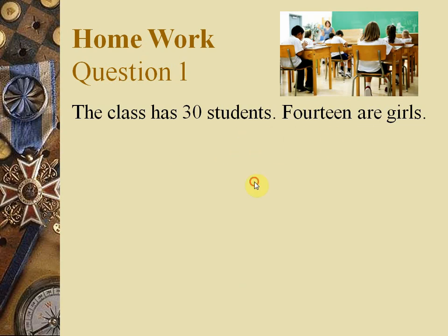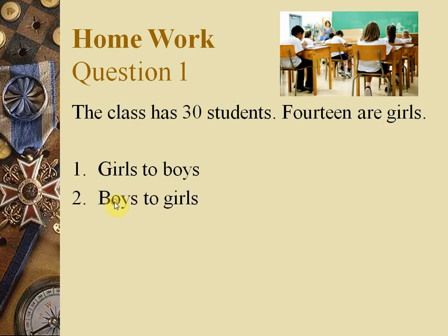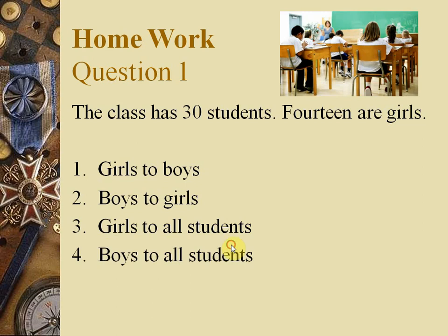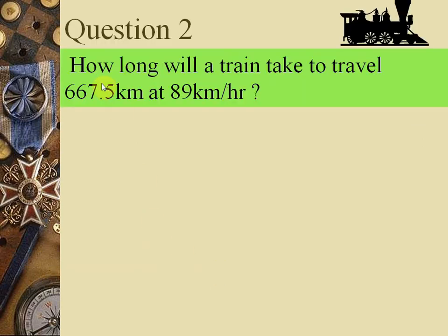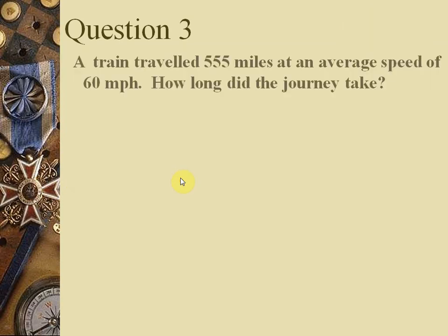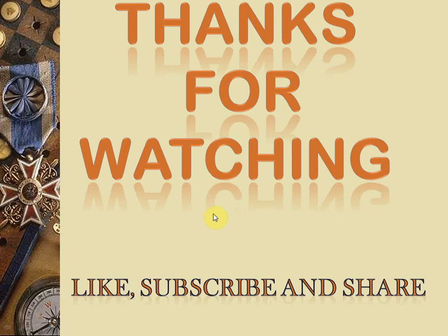Homework: Question 1 — A class has 30 students, 14 are girls. Find: girls to boys, boys to girls, girls to all students, and boys to all students. Question 2 — How long will a train take to travel 667.5 km at 89 km/h? Use Time = Distance ÷ Speed. Question 3 — A train travels 555 miles at an average speed of 60 miles per hour. Again find the time using T = D/S. Thanks for watching — be sure to complete the homework. Take care, Allah Hafiz.